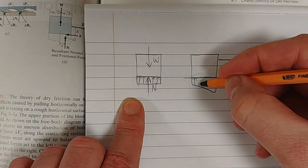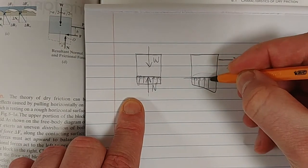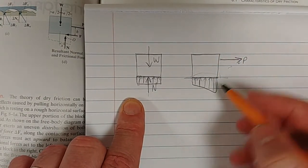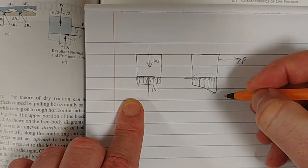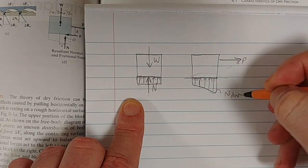That normal force begins to shift to the right, the resultant of it. Can you see? It begins to shift. This is your normal distribution.